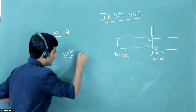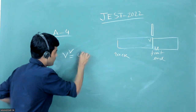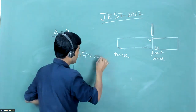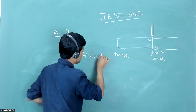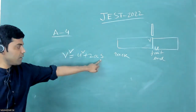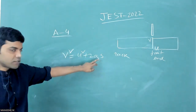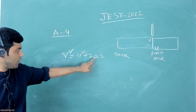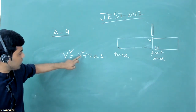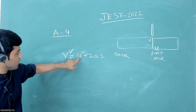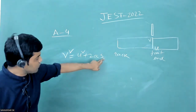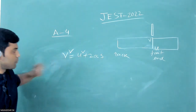As you know, the speed of a particle having constant acceleration is given by v² = u² + 2as. At a displacement s, with constant acceleration and initial speed u, the speed at that displacement will be given by this equation.